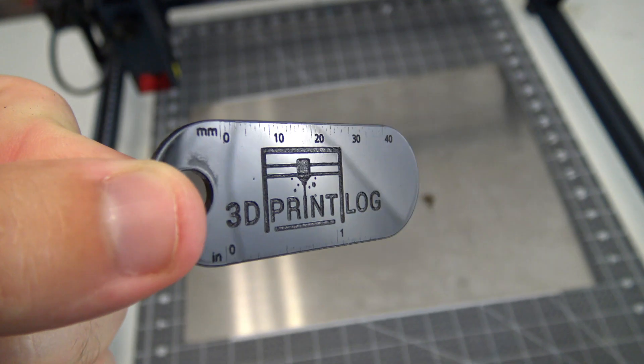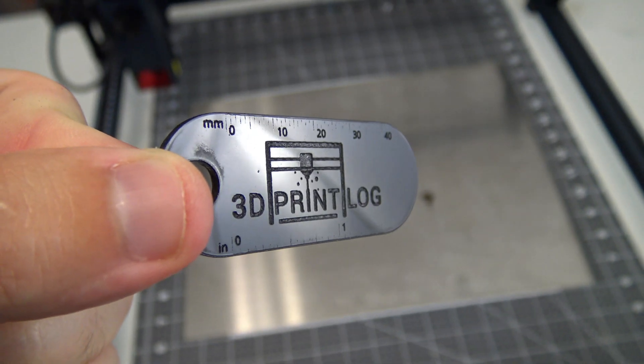Next up, acrylics. Diode lasers cannot cut or engrave clear acrylics. The visible laser light passes right through them and does nothing to the material. However, opaque acrylics do work. I use some opaque black acrylic, and those cut and engraved just fine.